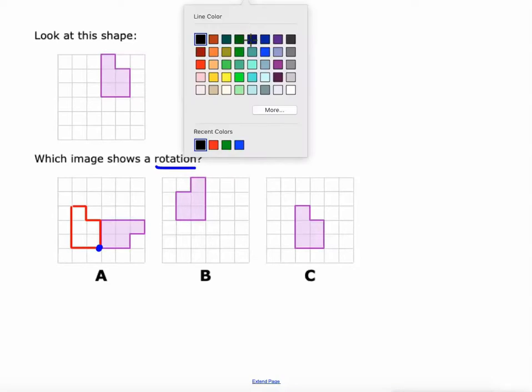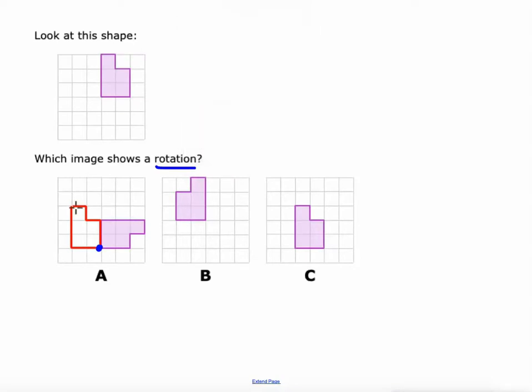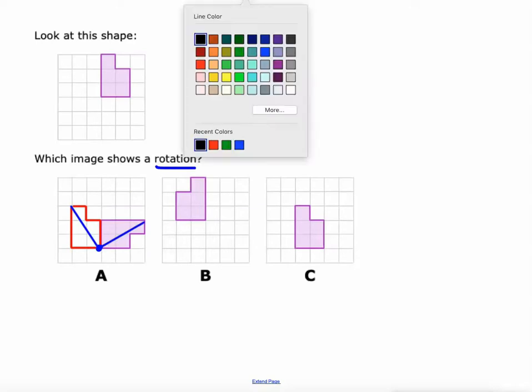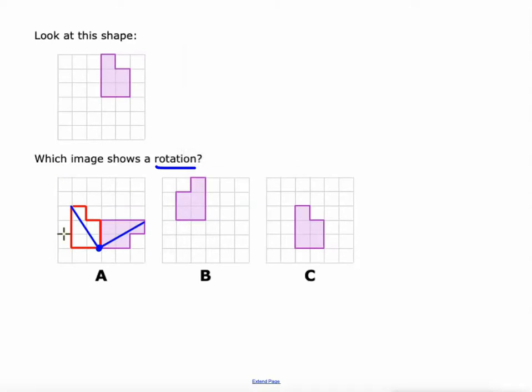In fact, I'll even show you with some lines here. Let's see. This point to the center of rotation over to the corresponding point on the new shape. See, that's a 90 degree angle. And let's do that again with a different color. This point to the center of rotation to the corresponding point. There's a 90 degree angle.